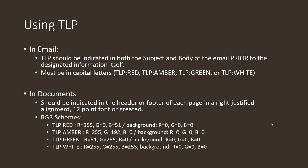To use TLP in an email, you need to indicate it in both the subject line and the body of the email, prior to the designated information itself. Don't put all the information first and mention TLP Red at the bottom — put it in the subject and tell people at the very top. If you're not the intended target, delete the email and notify the sender. The TLP designation needs to be in capital letters — TLP Red, TLP Amber, TLP Green, and so on. You can also use TLP in documents; many executive-level documents include it at the head of the document.